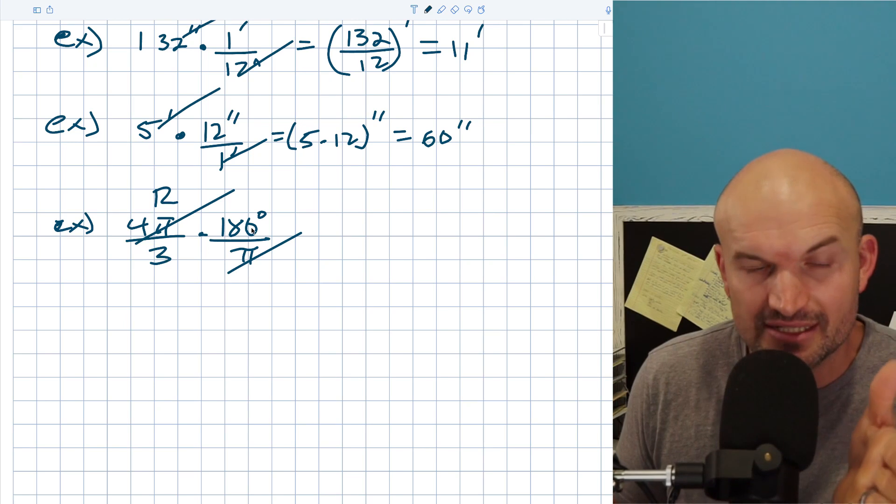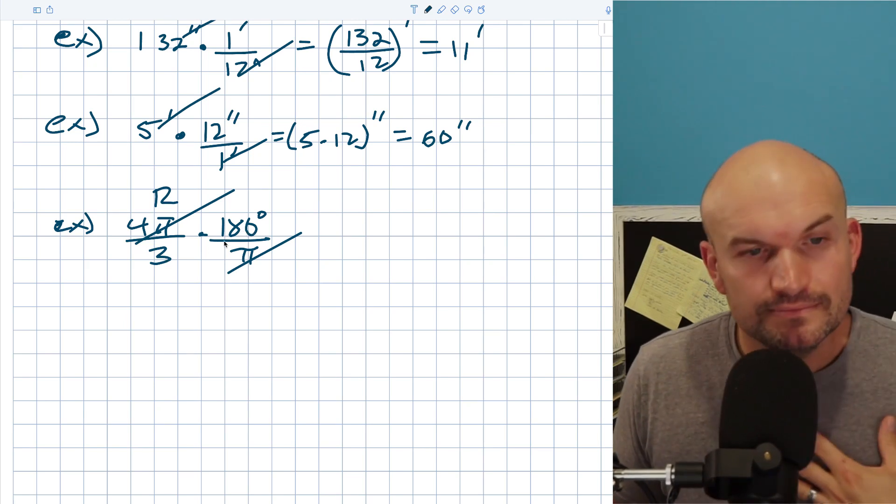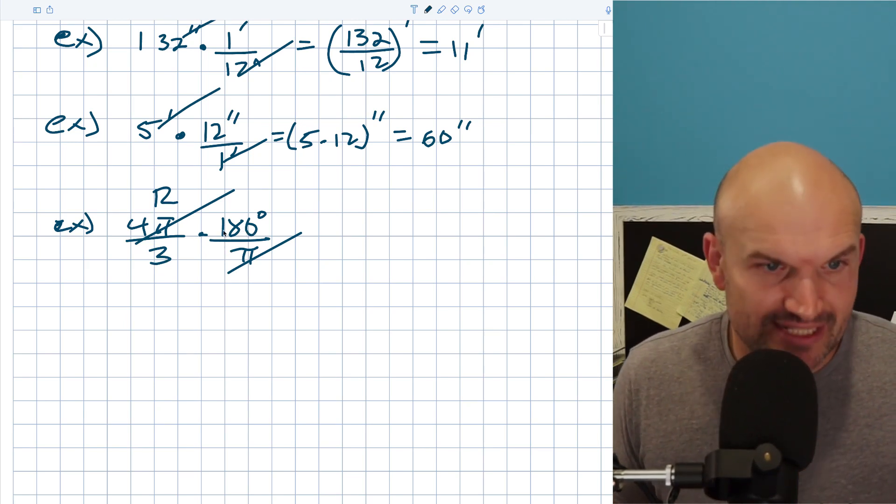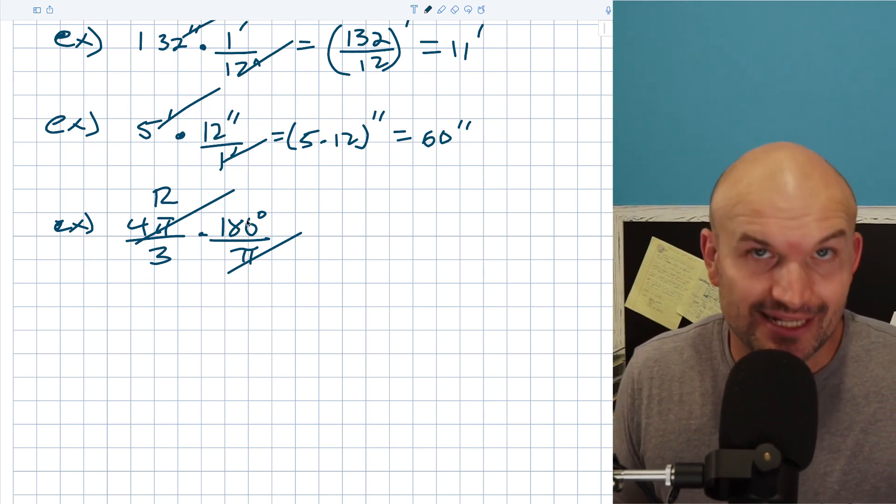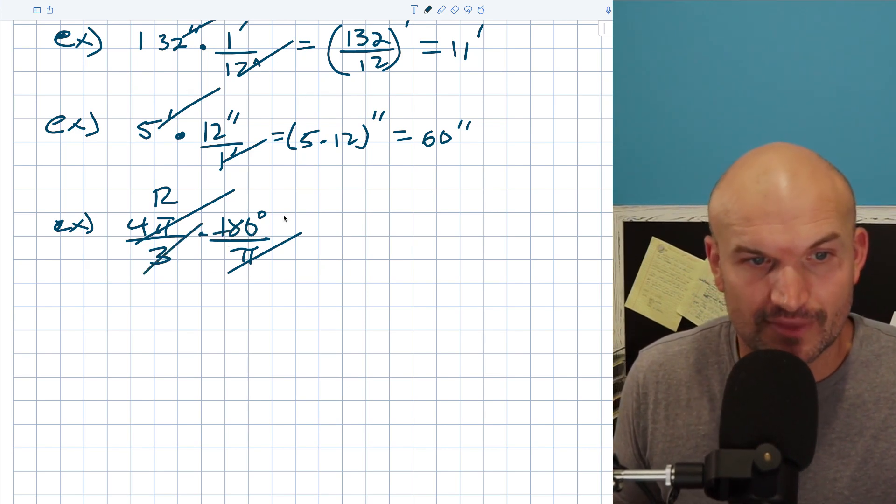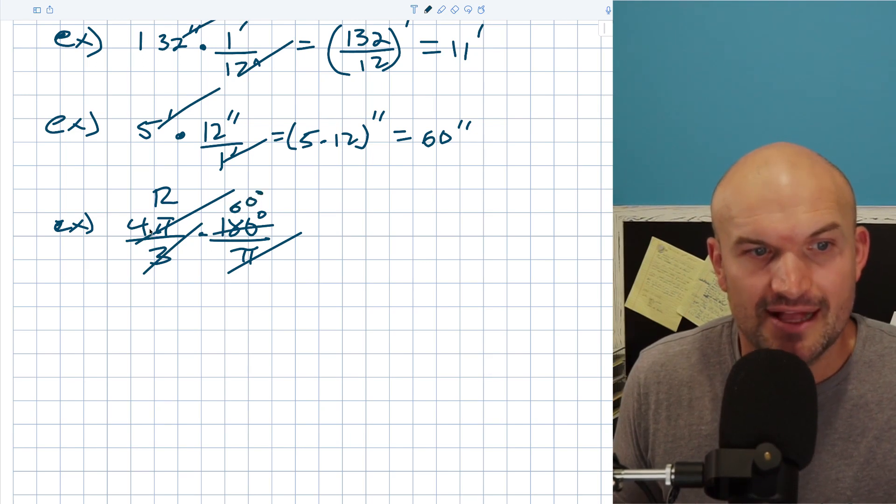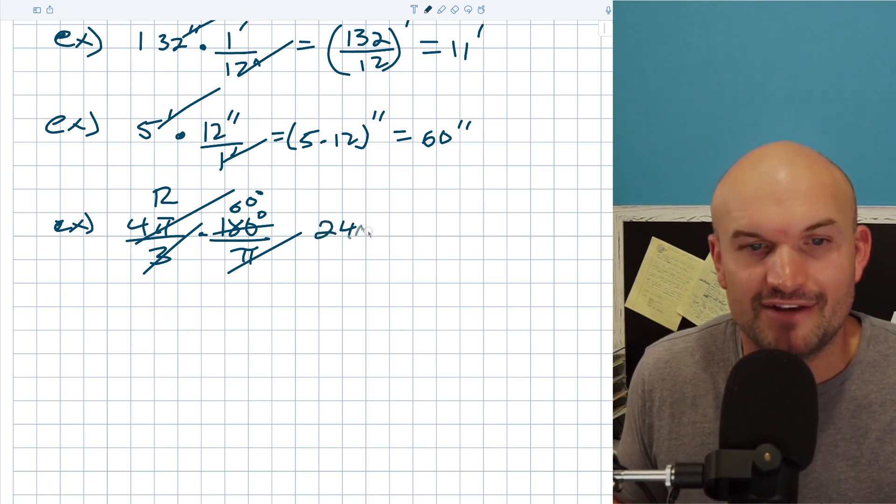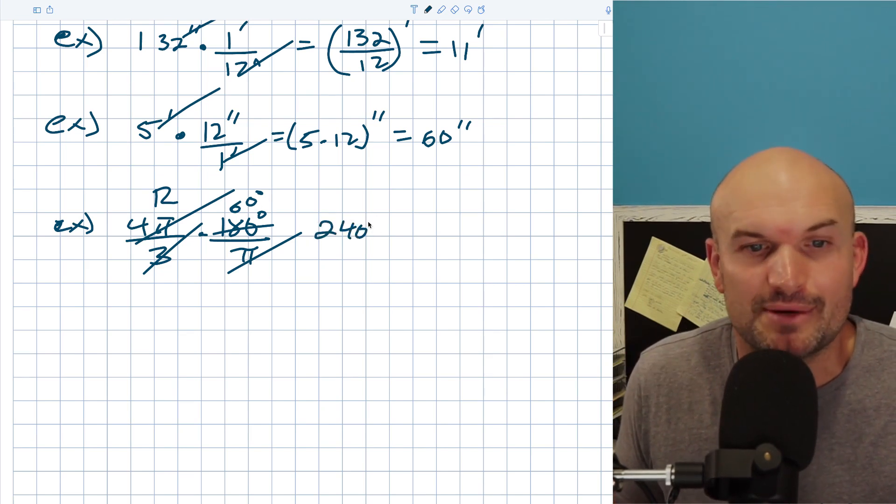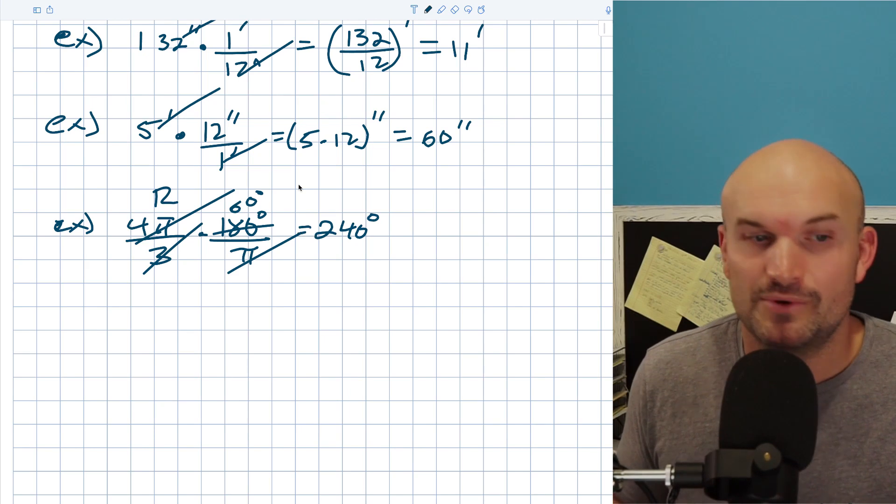Then I can say 3 divides into 180. Well, let's go with this. 3 divides into 18, 6 times. So 3's going to divide 180, 60 times. So that's going to give me 60 degrees. Then I do 4 times 6, which is 24, 4 times 60 is going to be 240. And again, what's my only degree? What's my only unit left? Degrees, which is 240.